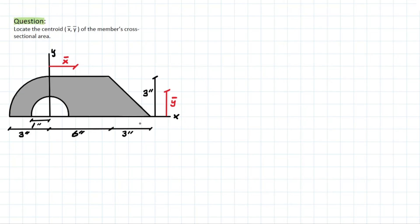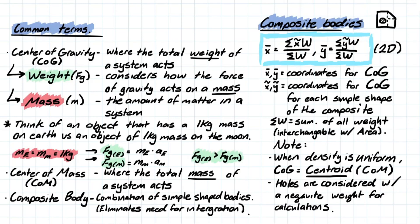So before we hop into this problem, we need to understand a couple definitions. I'm going to run through these really quickly, so bear with me. But here are a couple of the terms I just wanted to quickly go over, and the formula that we're going to be using today. So center of gravity. Center of gravity is where the total weight of the system acts. Now when I say weight, typically we tend to get weight and mass confused, so I wanted to just clear that up quickly. So weight can be considered as force of gravity, and weight is actually defined as considering how the force of gravity acts on a mass. So what's a mass? A mass is the amount of matter in a system.